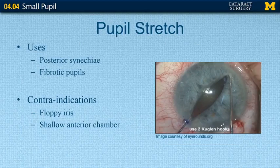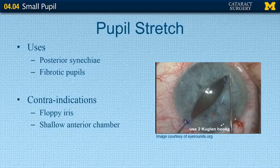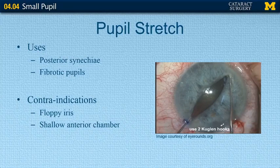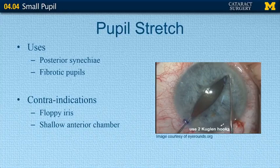Pupil stretch is typically used in cases of posterior synechiae or fibrotic pupils. Keep in mind that if you do pupil stretch in fibrotic pupils, it's not unusual to see some bleeding due to the scar tissue on the pupillary sphincter. However, you don't want to use pupil stretch in cases of floppy iris because it will make the floppy iris more pronounced and complicate surgery. Also avoid it in a shallow anterior chamber, as instruments may hit the cornea and cause endothelial dysfunction.